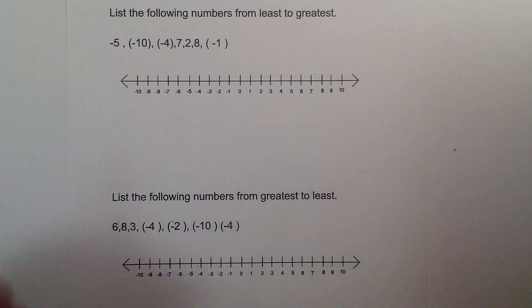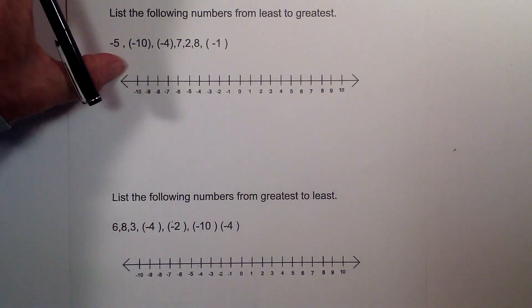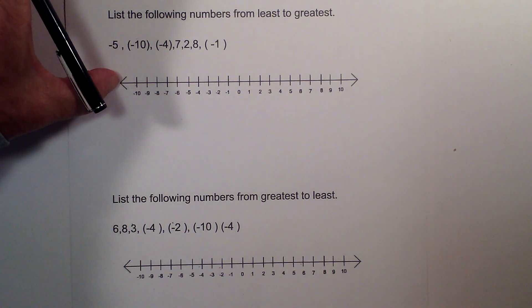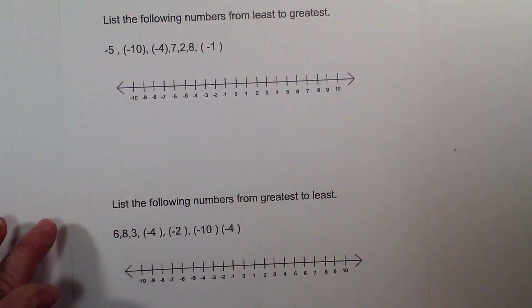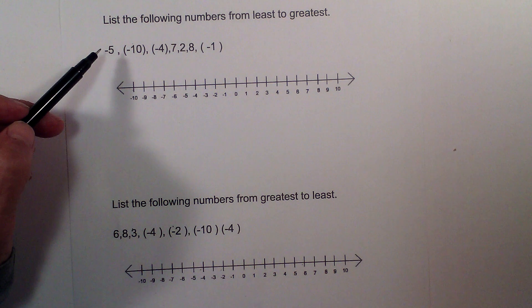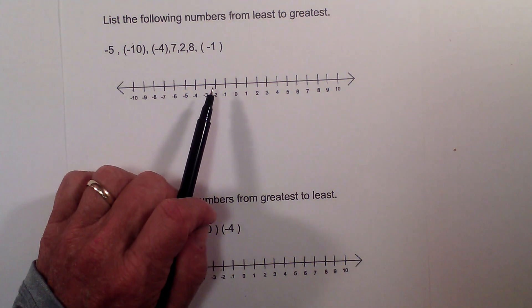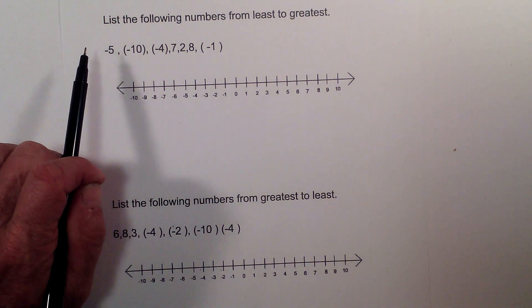In this video I would like to go over how to list numbers from both least to greatest and from greatest to least. We are going to deal with both positive and negative. I will first show you on a number line and then I will show you without the number line.